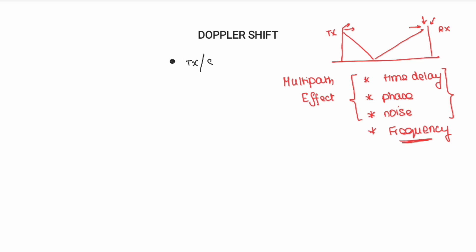Now we will see how we calculate the Doppler shift. Let us consider a transmitter, also called a source, which produces the signal. The receiver will be moving. Initially the receiver is at position X, and after a particular time T, the receiver moves to position Y. So initially you receive the signal at position X, and now you are receiving the signal at position Y. From the diagram, it is clear that Y is nearer to the source, and X is a little farther from the source.